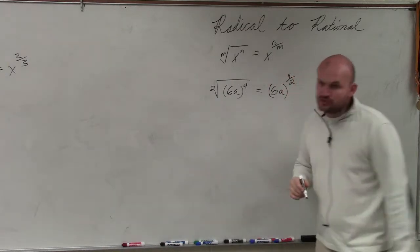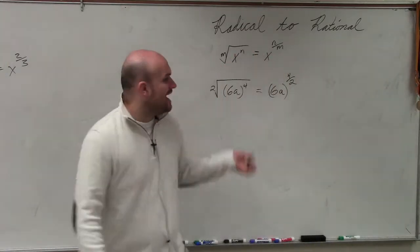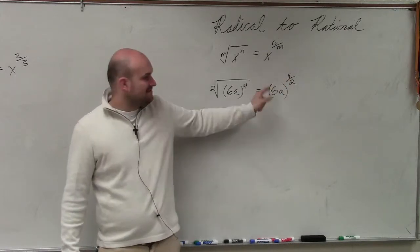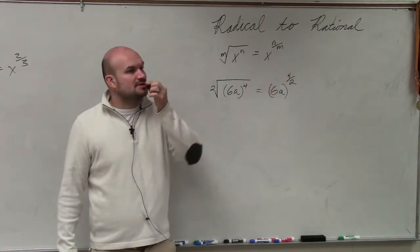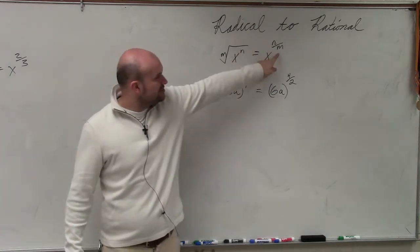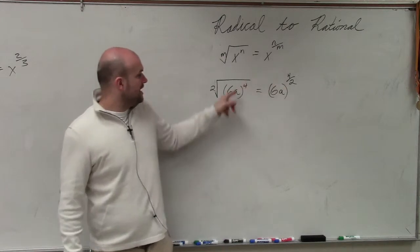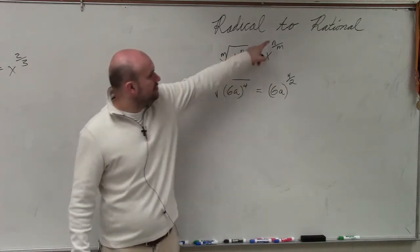Now, just make sure though, when you do that, again, you use parentheses. It's not a to the 4 halves times 6. Yes, Jasmine? Can I do that now? So the 2, the m, goes to your denominator as the rational exponent, and the 4 goes to your numerator.